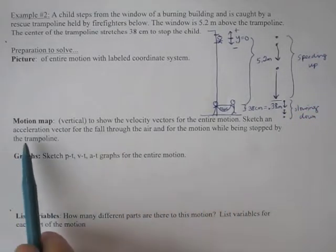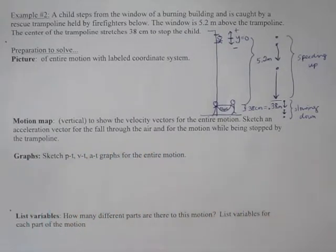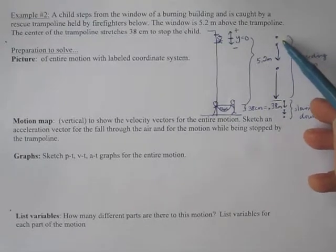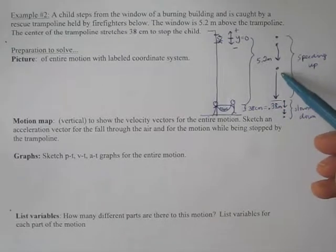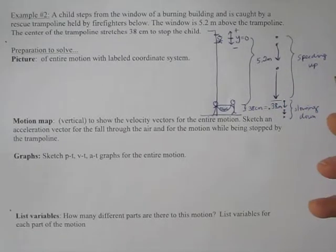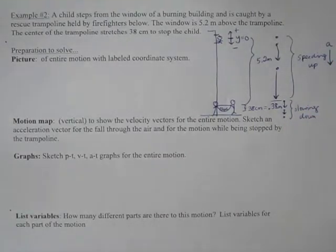Then we need an acceleration vector for the fall through the air and for the motion while being stopped by the trampoline. So here, if I think about my change in velocity, these arrows are getting longer in the downward direction. So change in velocity would be downward, so acceleration would be downward as well, which corresponds to our negative 9.8 meters per second squared.